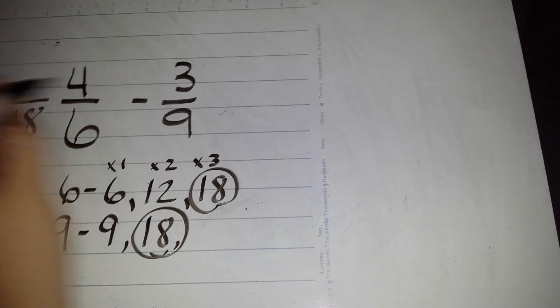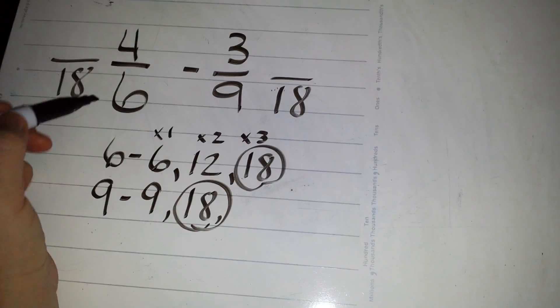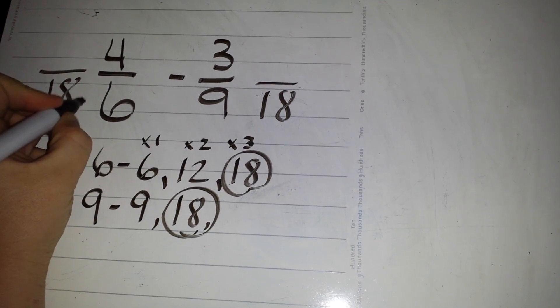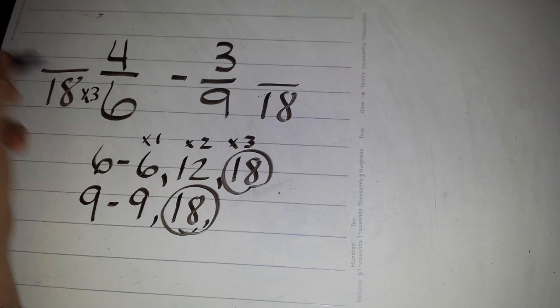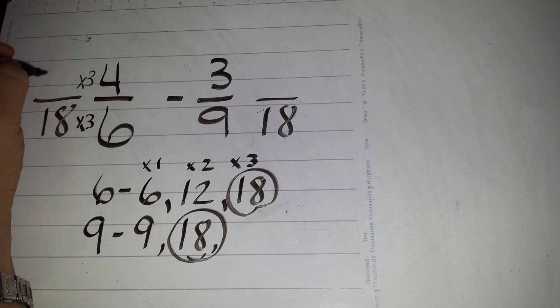So now I'm going to turn both of these fractions into common denominators. Six times three gives me eighteen. What I do to the bottom, I do to the top. So four times three gives me twelve.